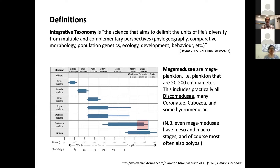The organisms that we're particularly interested in are termed the mega medusae. These are the megaplankton — plankton that are 20 to 200 centimeters in diameter. This includes all of the disc medusae and many coronates and cubozoans, and some hydromedusae — many of the jellyfishes with which you'll be familiar.